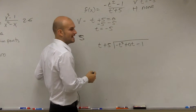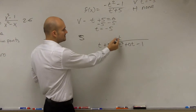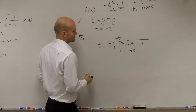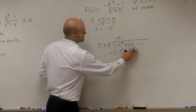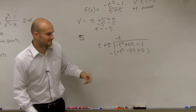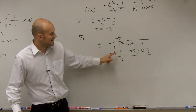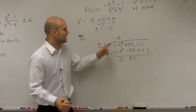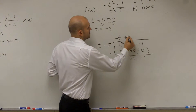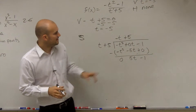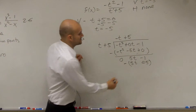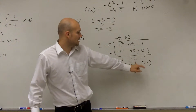So now let's substitute it in. t goes into negative t squared, negative t times. Negative t times t is negative t squared. Negative t times 5 is negative 5t. So we put it in parentheses and subtract. We put a 0 there as a placeholder. Negative t squared minus negative t squared gives us 0. 0t minus a negative 5t is going to give us a positive 5t. And negative 1 minus 0 is still just negative 1.